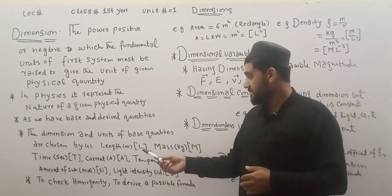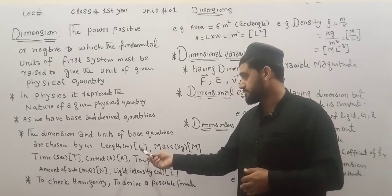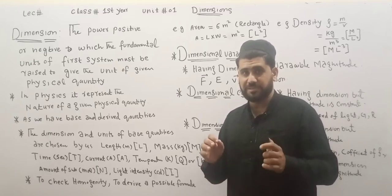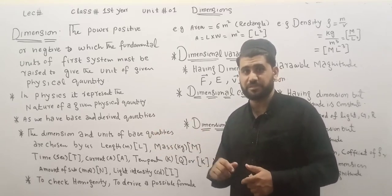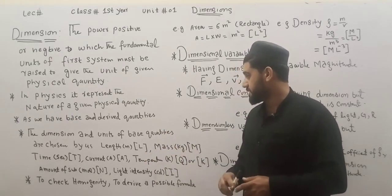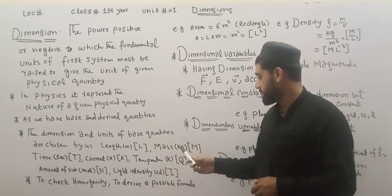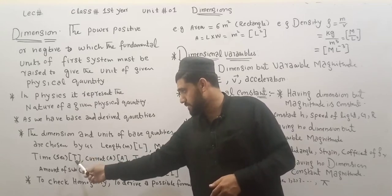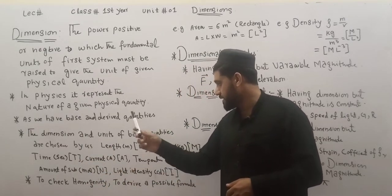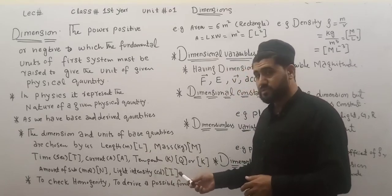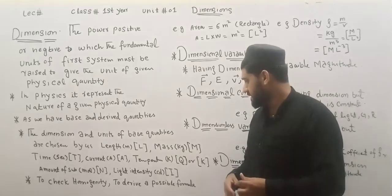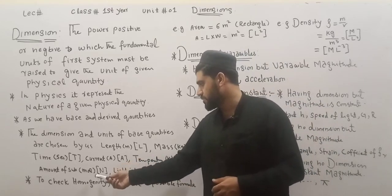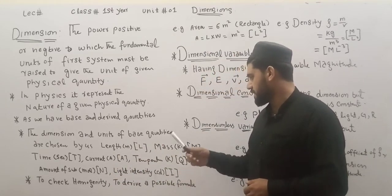For example, the dimension of length is capital L — shown in brackets. The dimension of mass is capital M, with unit kilogram. The dimension of time is capital T, with unit second. The dimension of current is A, and the dimension of temperature is Q. The amount of substance is capital N, and luminous intensity is capital I.